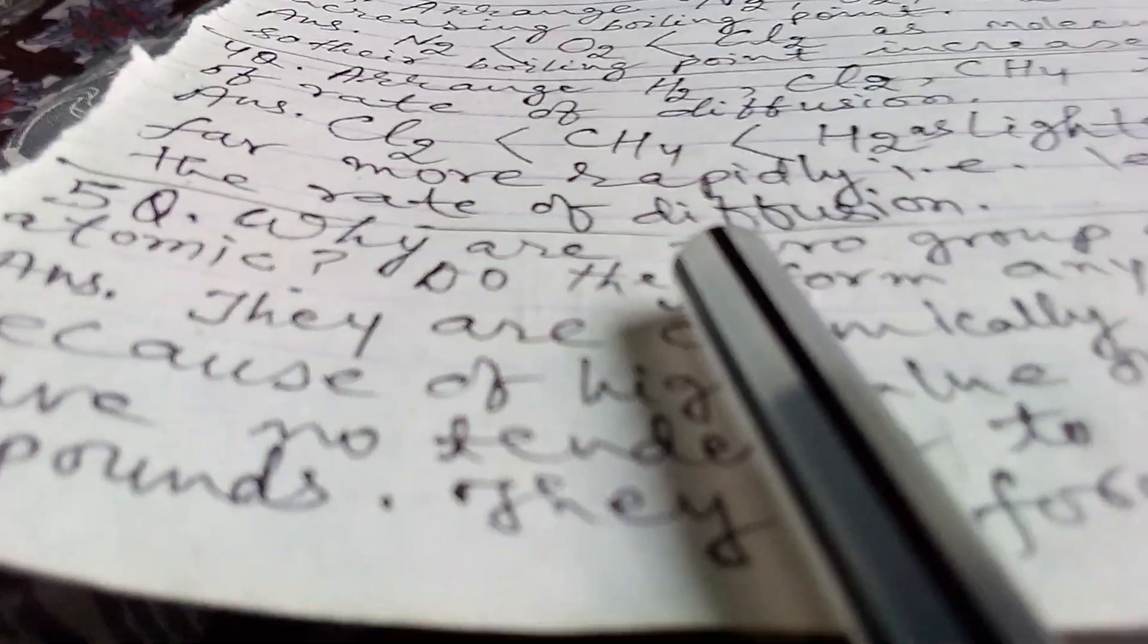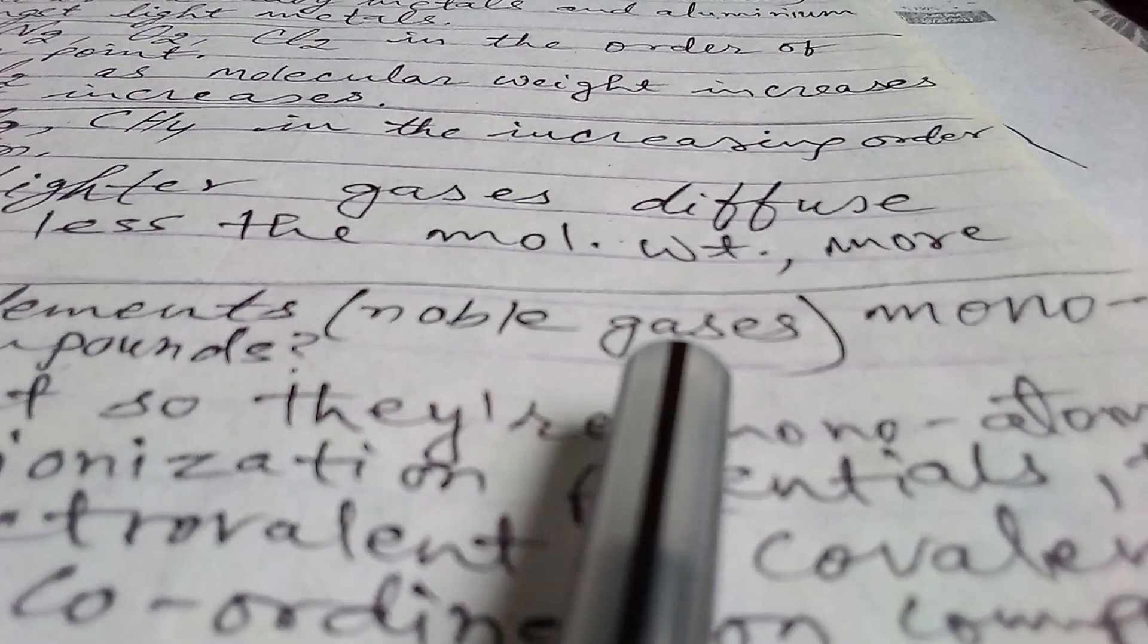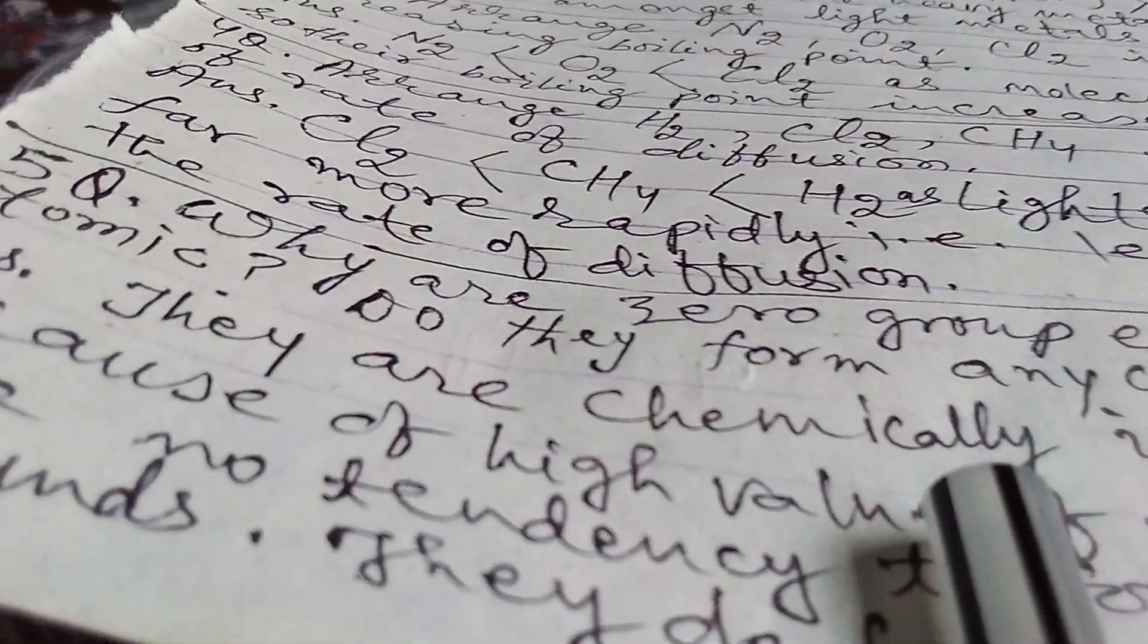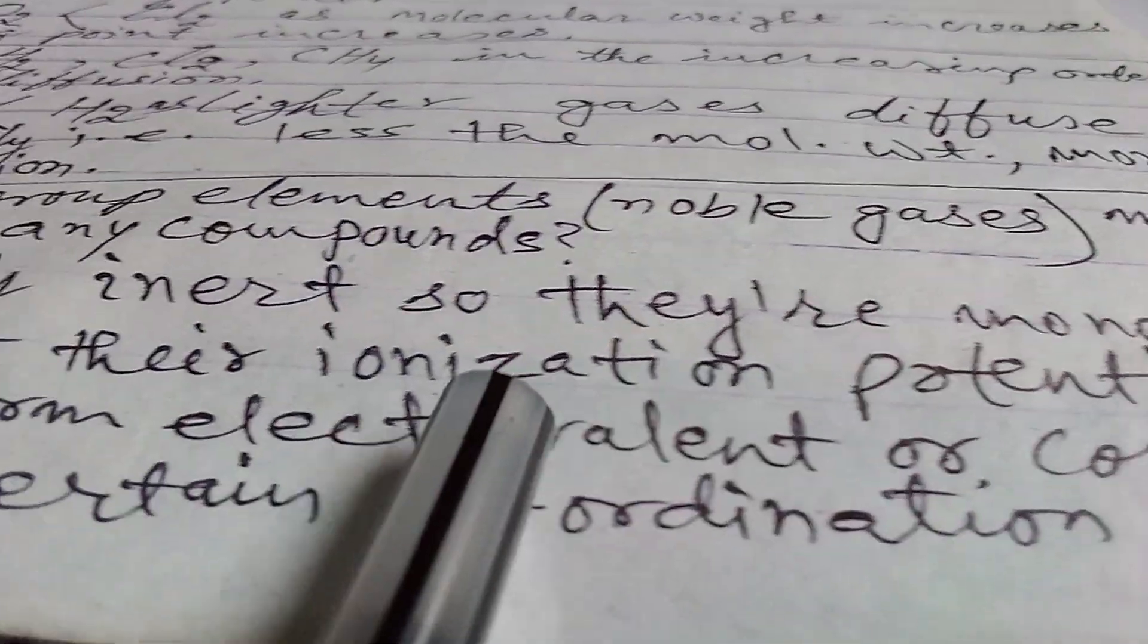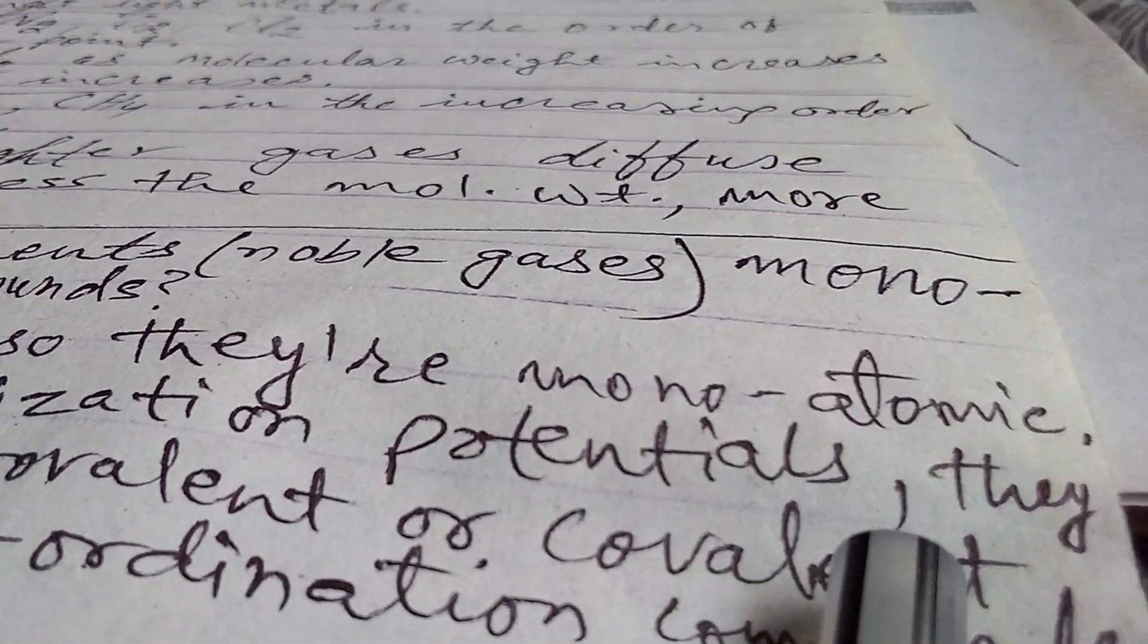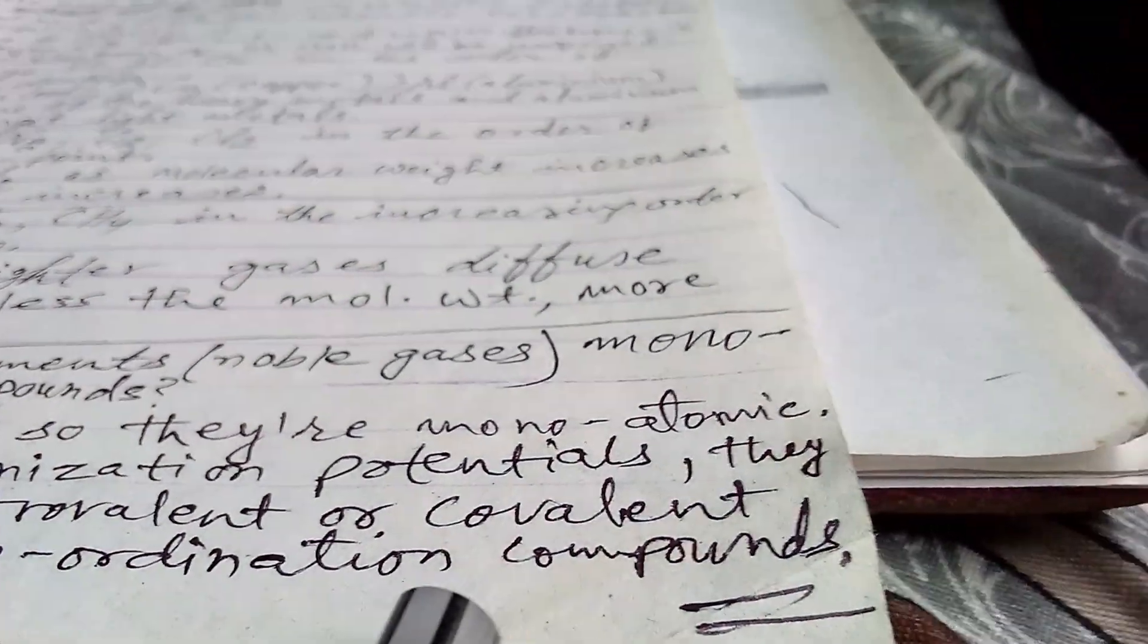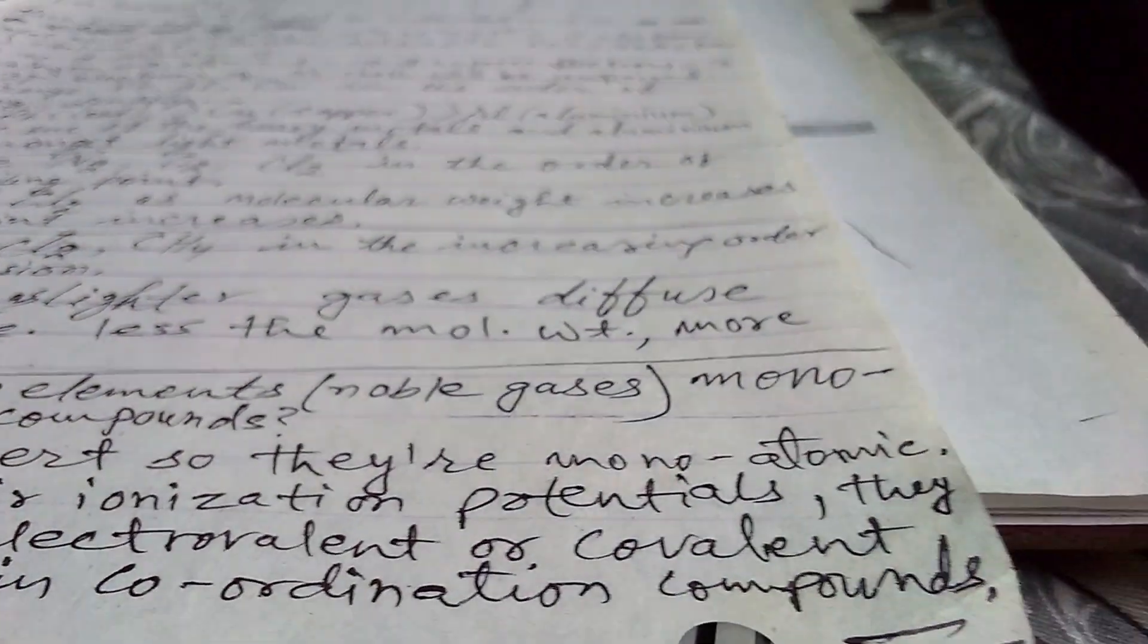Now fifth is: why are zero group elements, that is noble gases, monoatomic? Do they form any compounds? Answer is: they are chemically inert, so they are monoatomic. Because of high value of their ionization potentials, they have no tendency to form electrovalent or covalent compounds. They do form certain coordination compounds.